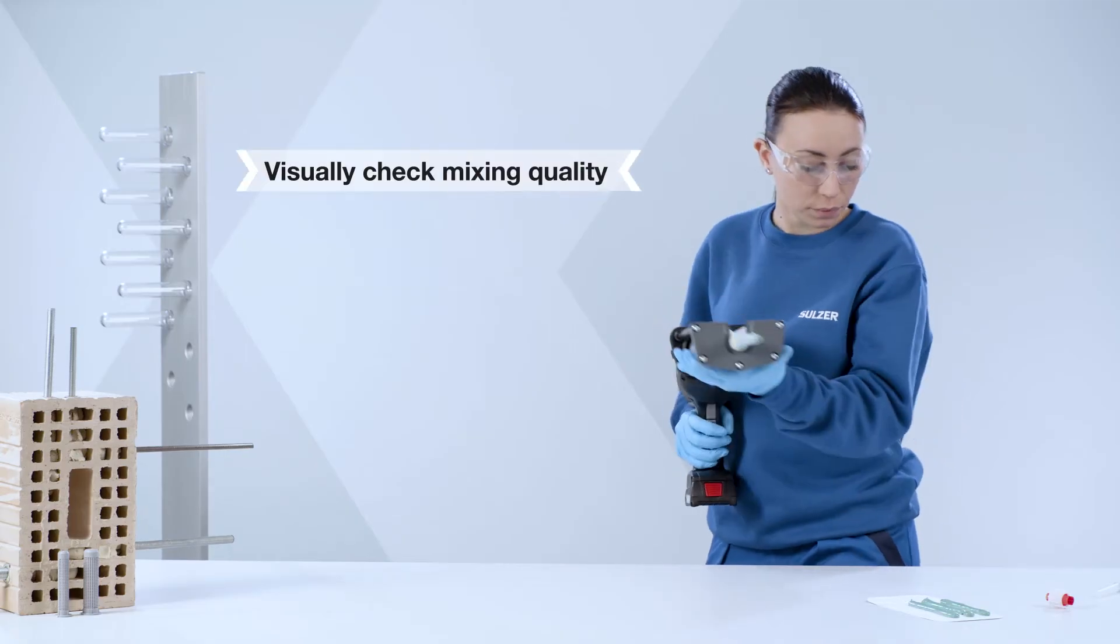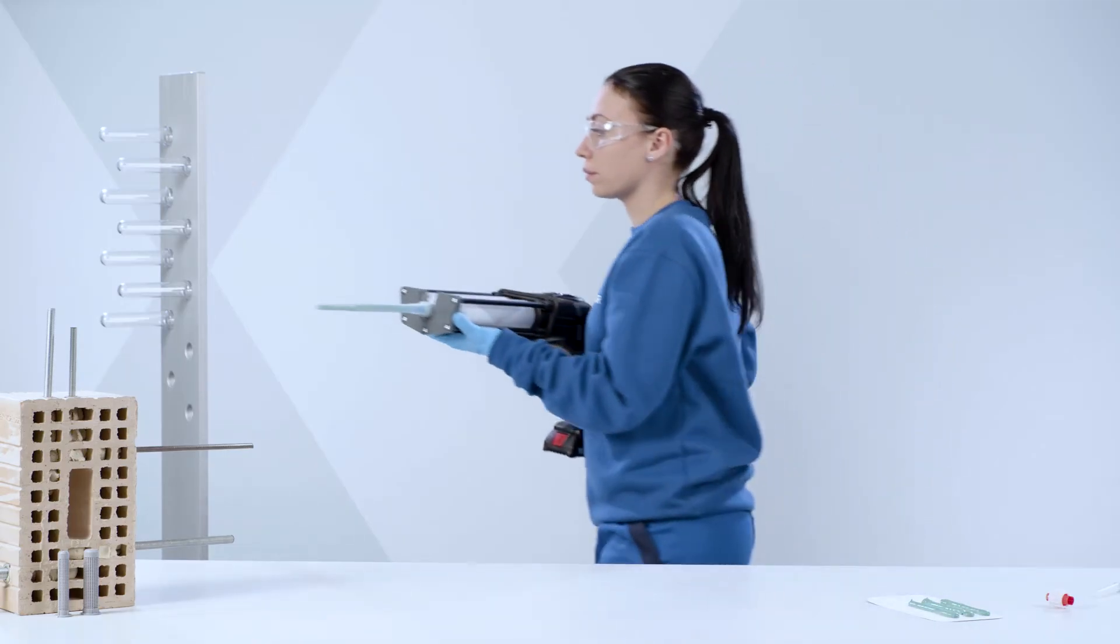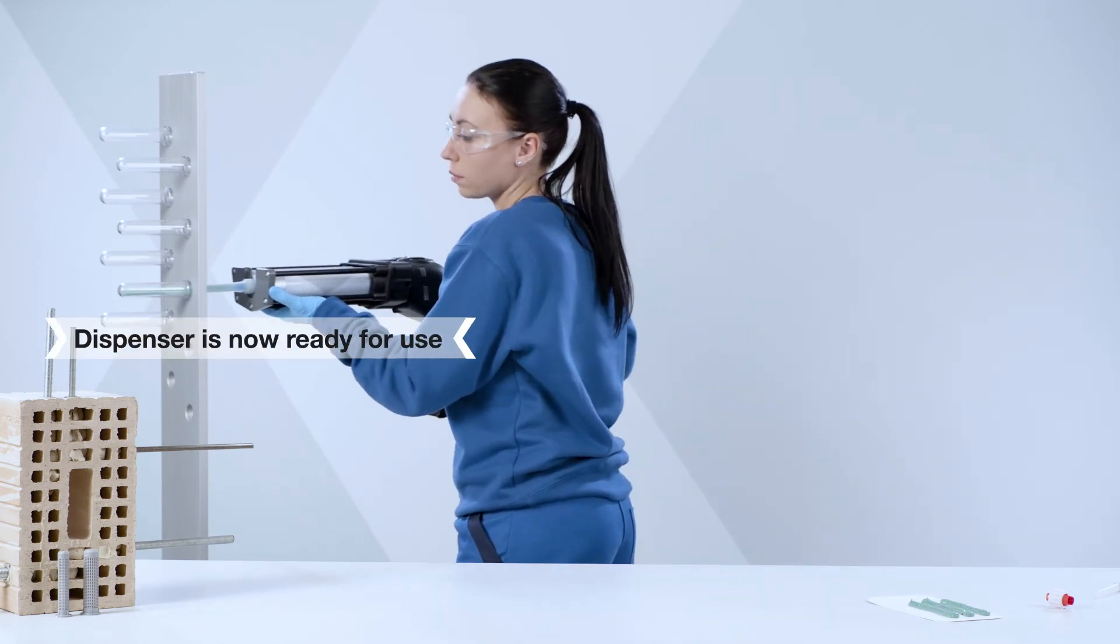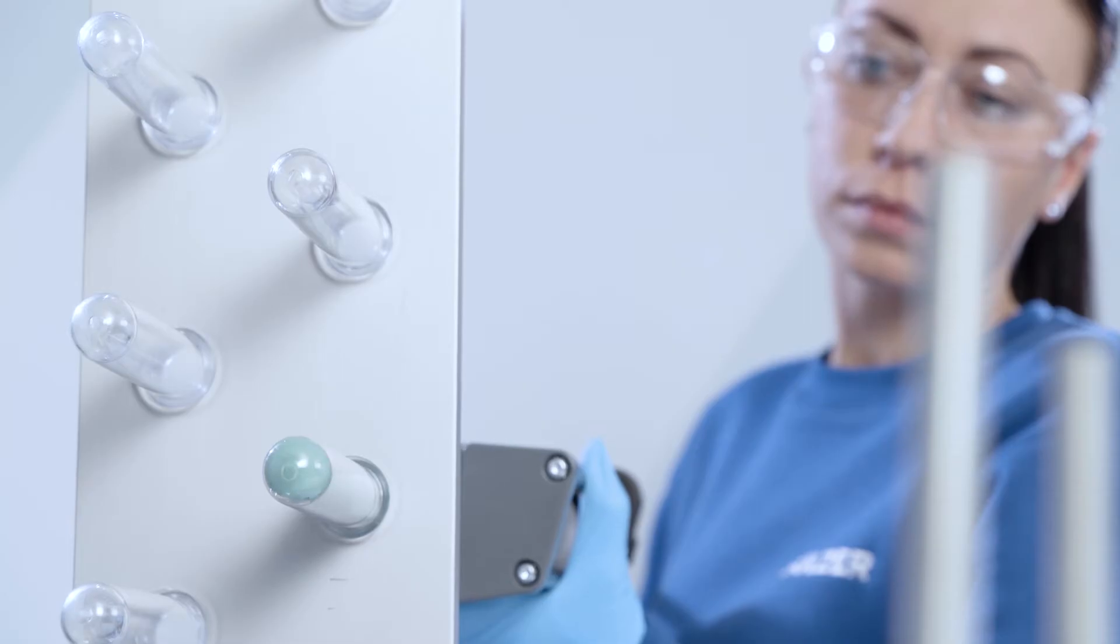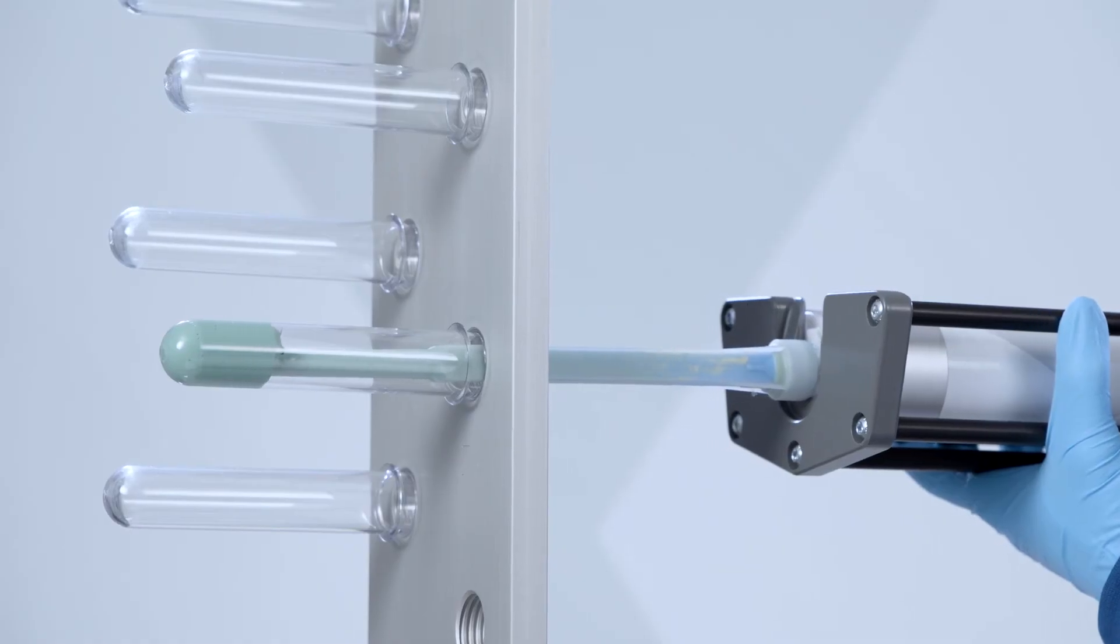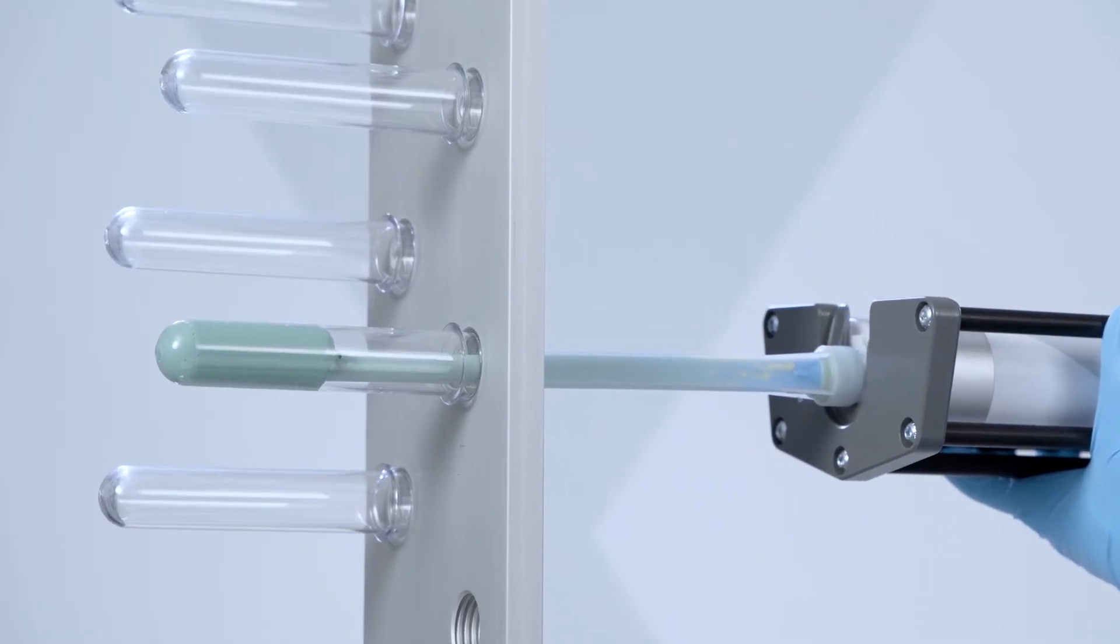Visually check the mixing quality. Your system is now ready for use. Gently press the lower trigger. This allows you to control the flow rate of the material.